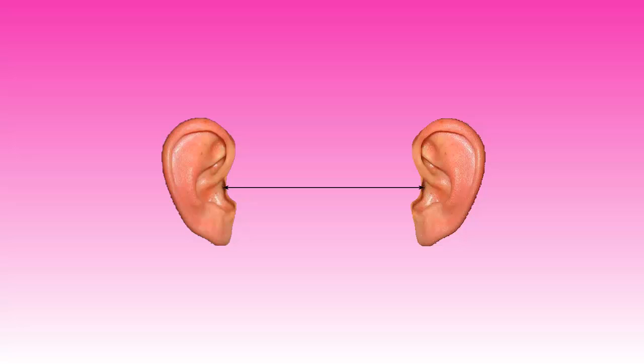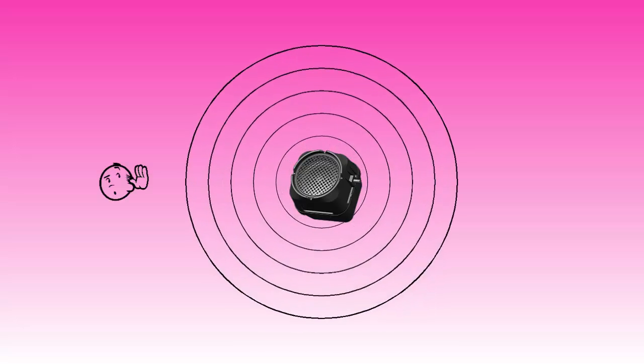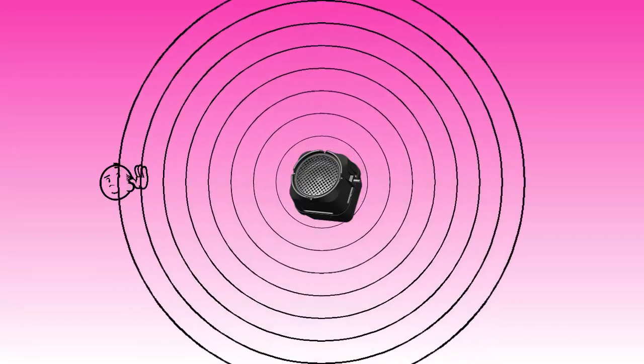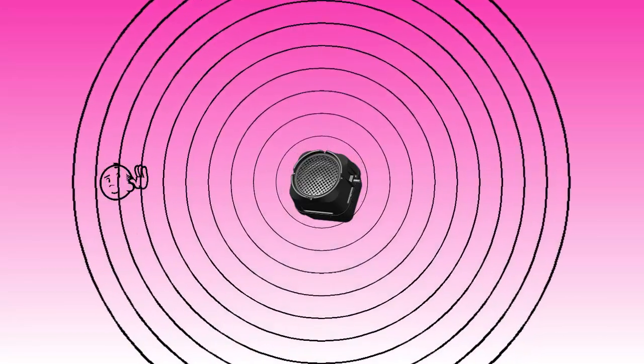The distance between the ears determines how difficult it is to determine where a sound is coming from. Sound travels in waves emanating from the source outwards. When a sound wave reaches our ears, we hear the sound. Since we have two ears, the sound will be heard by both ears.